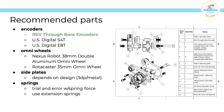Here are some recommended parts that FTC teams use for odometry pods. For encoders, most teams use REV through-bore encoders, though in past seasons people have used the U.S. Digital S4T and E4T encoders. A downside of REV encoders is that they take up a pretty large footprint, while the U.S. Digital ones take up a small footprint. However, the U.S. Digital encoders are somewhat outdated, less durable than the REV ones, and the S4T in particular is quite expensive. For omniwheels, there are two main options: the Nexus 38mm omniwheels and the Rotocaster 35mm omniwheels — either one is fine to use.